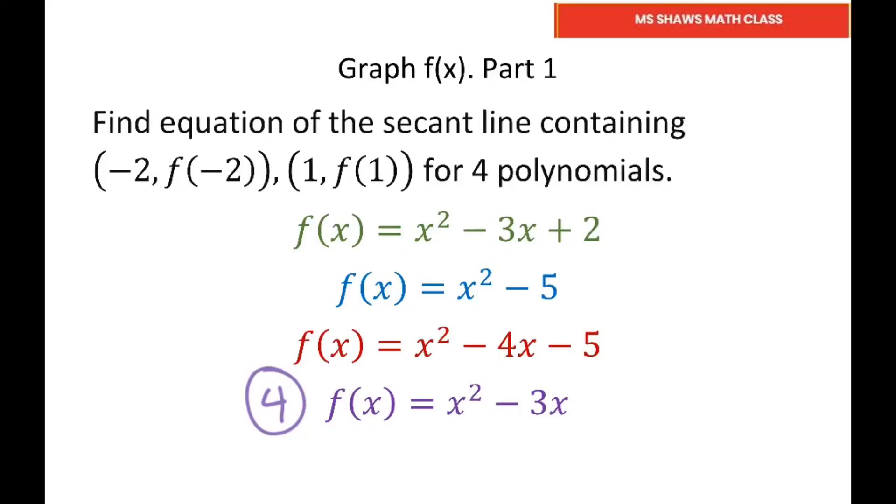Hi everyone. We're going to find the equation of the secant line containing our x at negative 2 and 1, which is the average rate of change for number 4 here. And I already did these three on separate videos. And we're also going to graph the secant line and f of x.